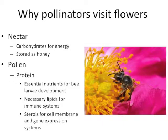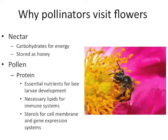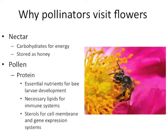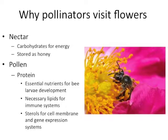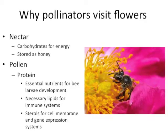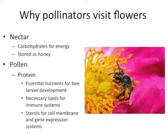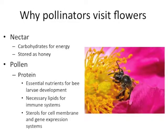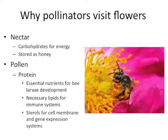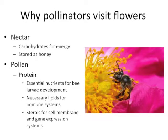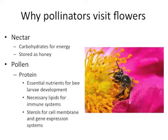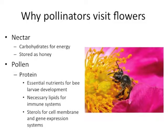Pollinators visit flowers for a variety of reasons, with the two primary reasons being nectar and pollen collection. Nectar serves as a source of carbohydrates for energy. Bees store nectar as honey, which they use as a source of energy later in the season when there are no sources of nectar available.